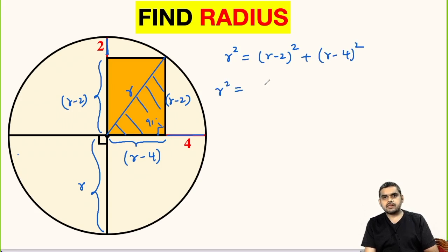r squared equals, we will expand this and we will use the identity a minus b whole square is equal to a squared minus 2ab plus b squared. So this will be r squared minus 4r plus 4, and likewise this will be r squared minus 8r plus 16.